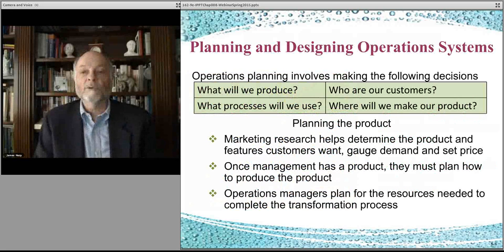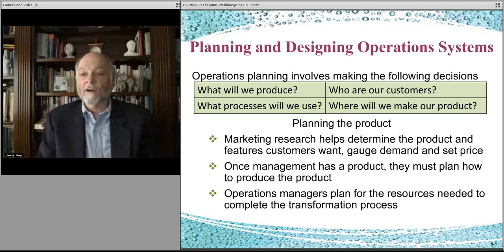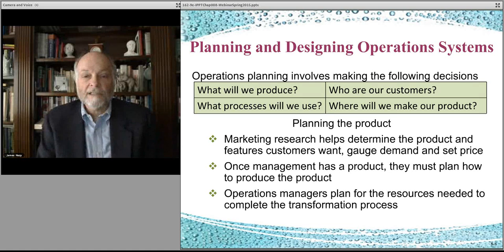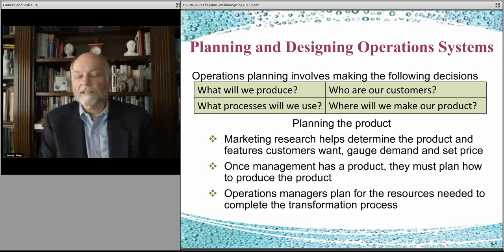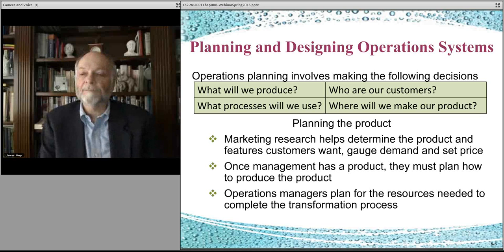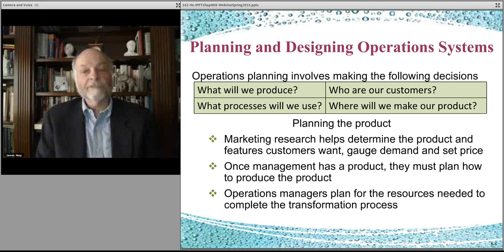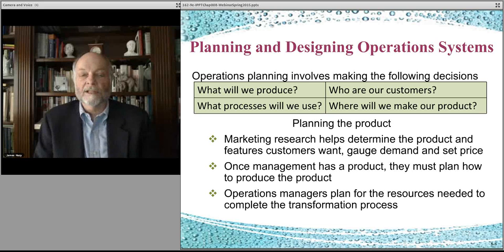What is it that you do when you plan and design your various operations? You figure out what it is you're going to produce, who the customers are, and what you'll use to do this. With Subway, there could have been multiple ways they would have done it — they could be behind the counter like delis and make the sandwich without you seeing it, or they could have the assembly line process that they have. You figure out how to create a particular process model that everyone in the organization conforms to.